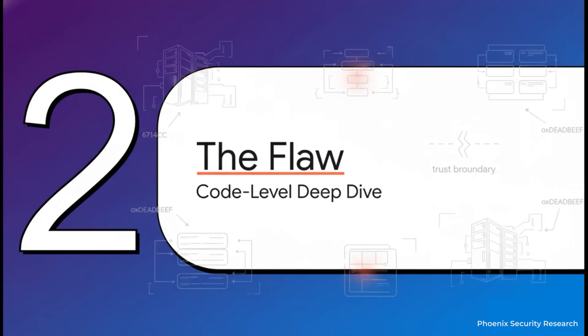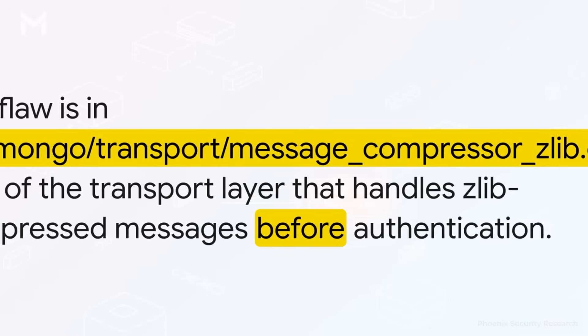Now for the technical anatomy of the bug. We're going to look at the exact line of code that failed and turned a standard feature into a major security hole. The entire problem lives in one file deep inside Mongo's transport layer. This code handles how data gets sent over the network. And crucially, this piece of code — the part that decompresses Zlib messages — runs before any authentication ever happens.